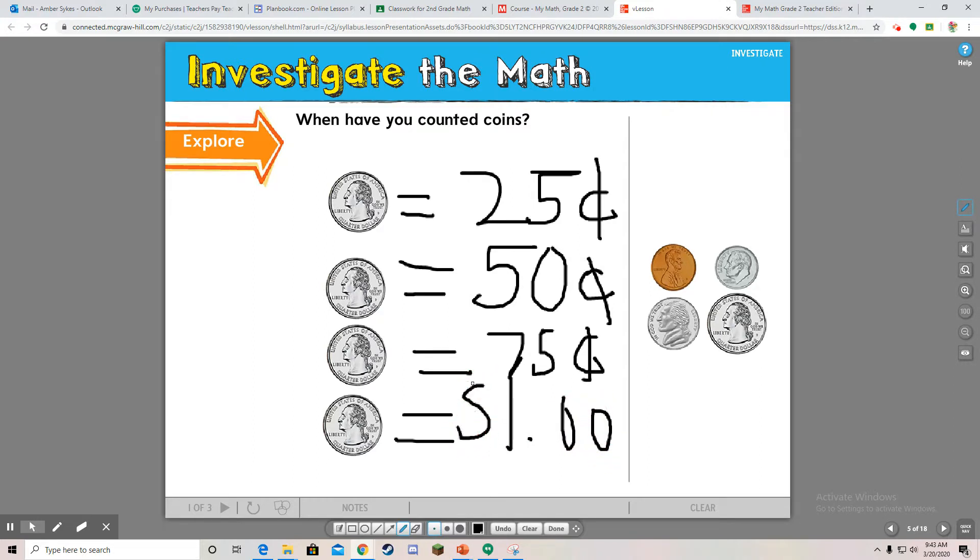So let's review that. One quarter, twenty-five cents. Two quarters, fifty cents. Three quarters, seventy-five cents. And four quarters equal one dollar. Perfect.